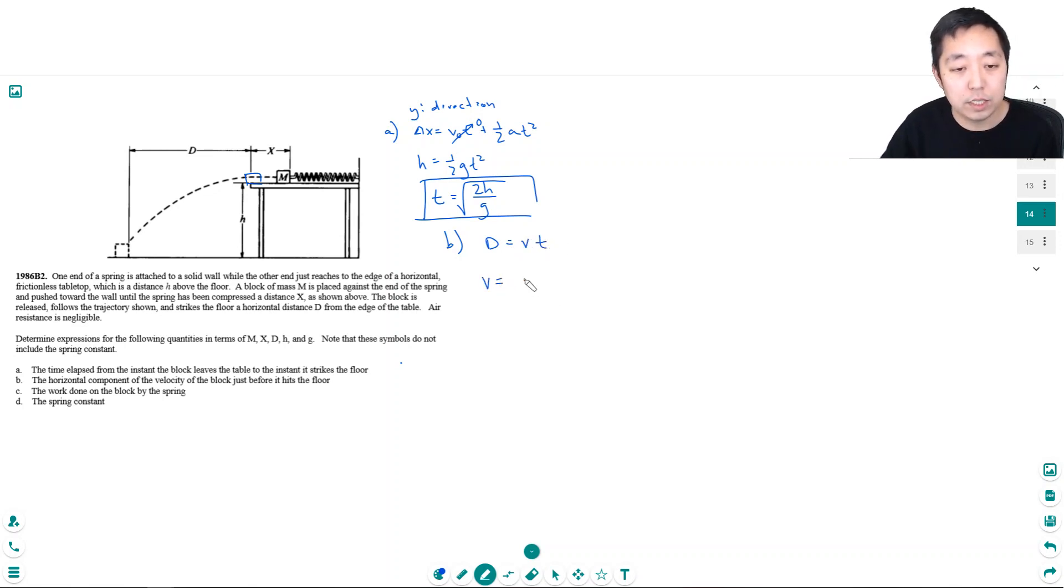So its velocity is given by distance over time. Well, the distance is already given as a variable, one of the variables I can use, and the time we solved was square root of 2h over g from part a. So I can flip the square root, so it would be d times square root of g over 2h. That would be its velocity here.